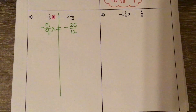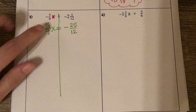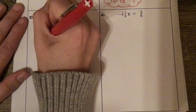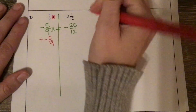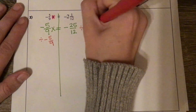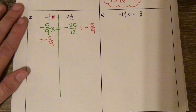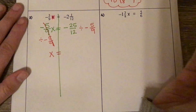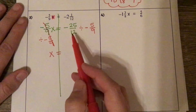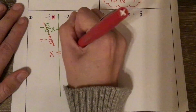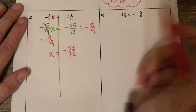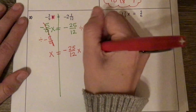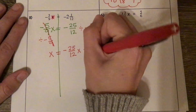Now that it's rewritten, I'm going to go through my solving process. It's being multiplied by negative 5 ninths, so I'm going to divide by negative 5 ninths. Since it's already a fraction, I'm okay with using the division sign. These will cancel out, leaving just x equals. When we divide, we need to keep it, switch it, flip it. Keep it as negative 25 over 12, switch it from division to multiplication, flip it from negative 5 over 9 to negative 9 over 5.